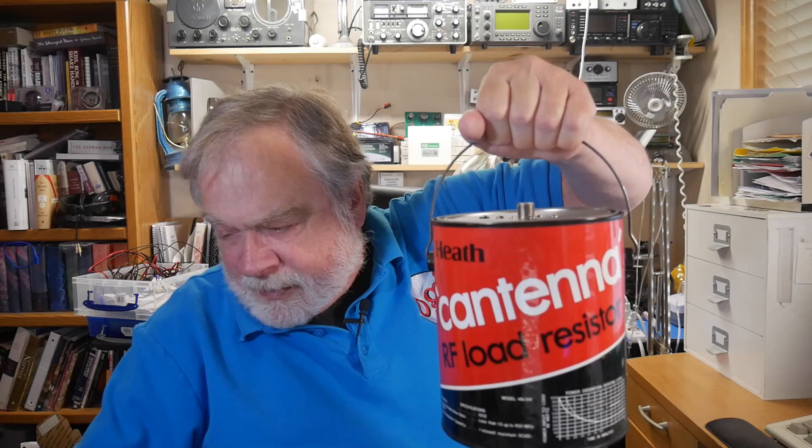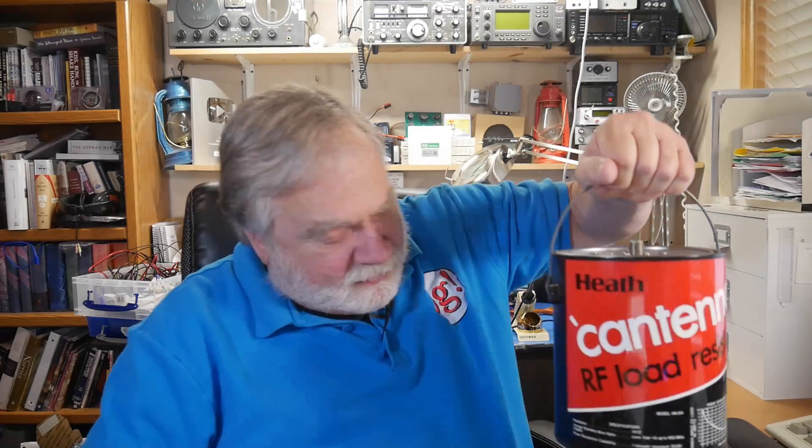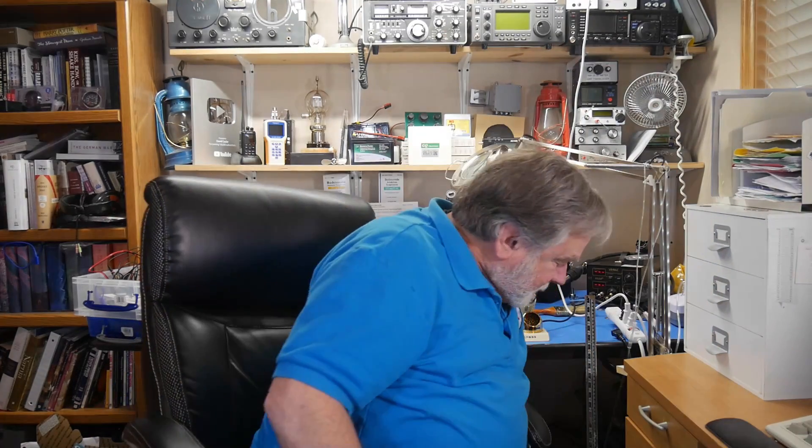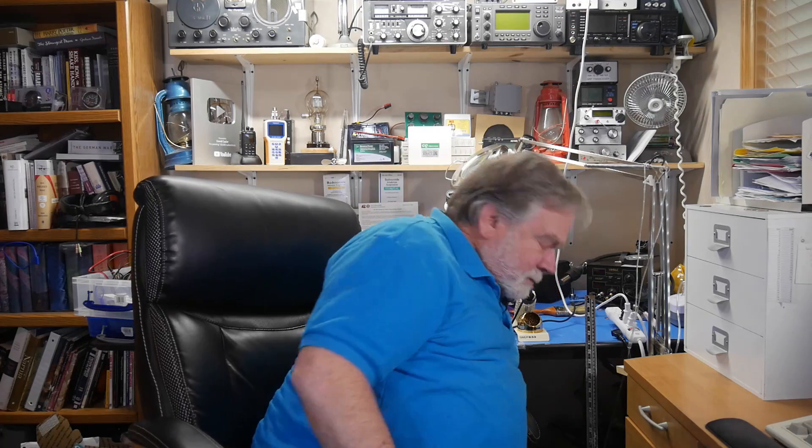This is my dummy load. It's a Heath kit, called a cantena. It's got a very large 50 ohm resistor in there and it is filled with mineral oil. You can put transformer oil in there if you want, but mineral oil is a lot easier to get. Home Depot or your local pharmacy or whatever, it's used for a variety of things.